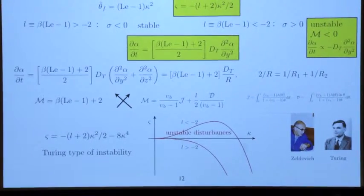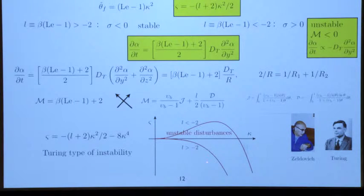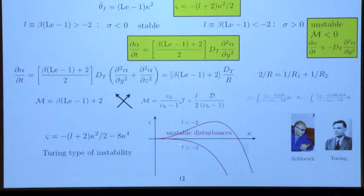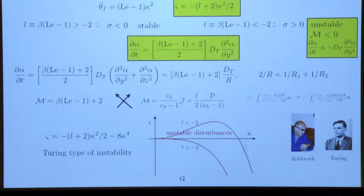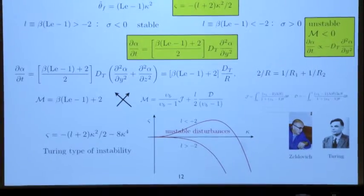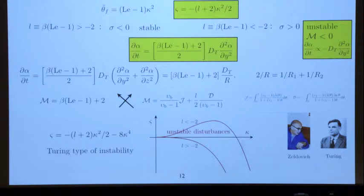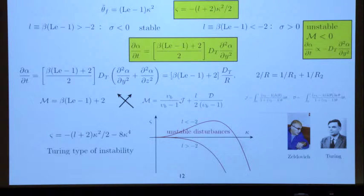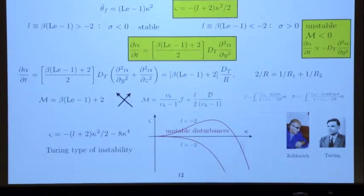To summarize: for Lewis number sufficiently larger than one, you have no thermodiffusive instability—diffusion is stabilizing the flame. But you have unstable disturbances as soon as the Lewis number is sufficiently small. This was understood by Zeldovich in a book, written in words without equations, where he said: if the thermal diffusivity is sufficiently strong, you have a stabilizing effect; if it is not strong compared to the molecular diffusion of the species, it is unstable. So he understood the mechanism.